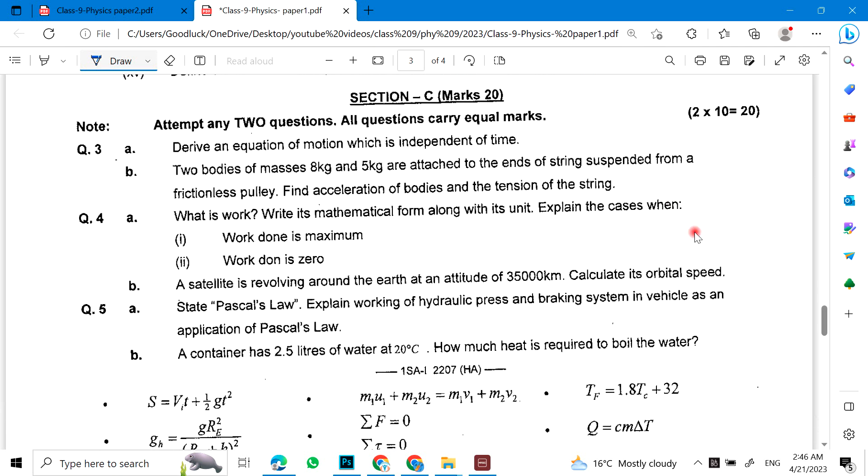And you will derive an equation of motion which is independent of time. So it is the third equation of motion. This is what you have to derive. Third equation of motion. Two bodies of masses are attached to the ends of a string suspended from frictionless pulley. Find the acceleration of bodies and the tension of the string.